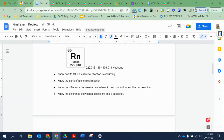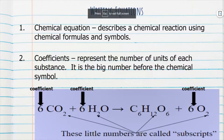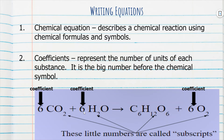Know the difference between a coefficient and a subscript. Coefficients are the large numbers at the front of atoms or molecules. For example, a coefficient of 6 in front of CO2 means there are six molecules of CO2; a coefficient of 6 in front of H2O means six molecules of H2O; and a coefficient of 6 in front of O2 means six molecules of oxygen. The small numbers in the bottom right-hand corner are subscripts: oxygen has a subscript of 2, hydrogen has a subscript of 2, carbon has a subscript of 6, hydrogen of 12, oxygen of 6, and this oxygen has a subscript of 2.